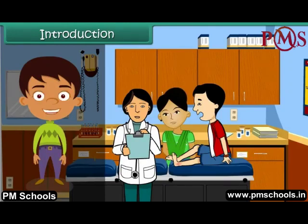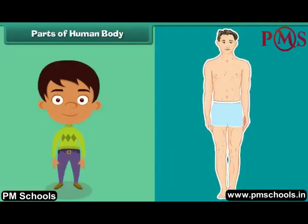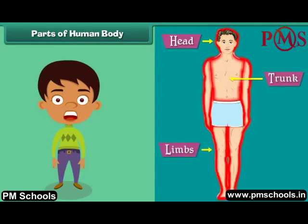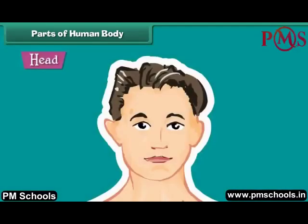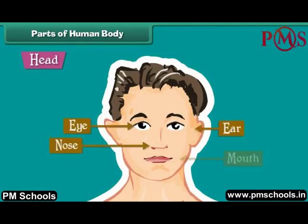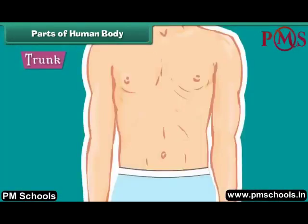In this lesson you will learn about the different organ systems of our body and their functions. The human body is divided into three main parts: head, trunk, and limbs. The head is the uppermost part of the body — eyes, ears, nose and mouth are located on it. The trunk is the middle part of the body, divided into chest and abdomen.